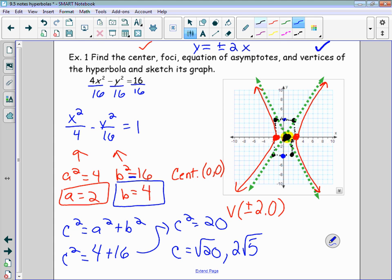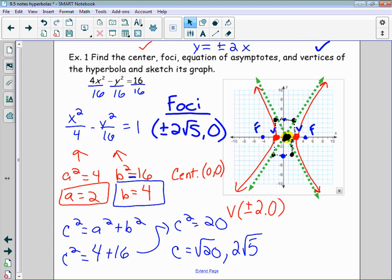So they will be located somewhere, we can get the decimal approximation for 2√5, 4.4 or something. So the foci would be somewhere here, 2√5, and somewhere here. So there's our foci. There's our vertices. Remember, the foci will always be further away from the center. And the location of those for the foci would be, since we're starting at 0 and we're just going 2√5 to the right and left, that would be (±2√5, 0). Any questions with that?